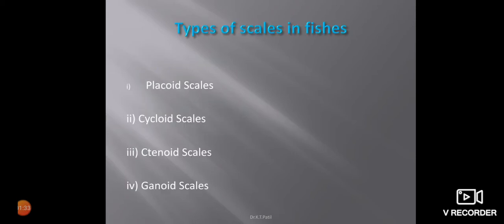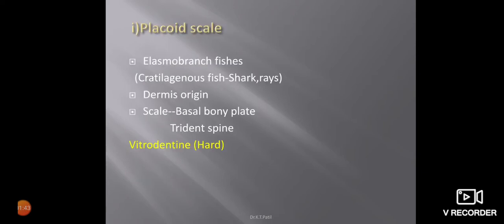In fishes, four types of scales are found: Placoid scales, Cycloid scales, Ctenoid scales, and Ganoid scales. First, let us see the Placoid scale.